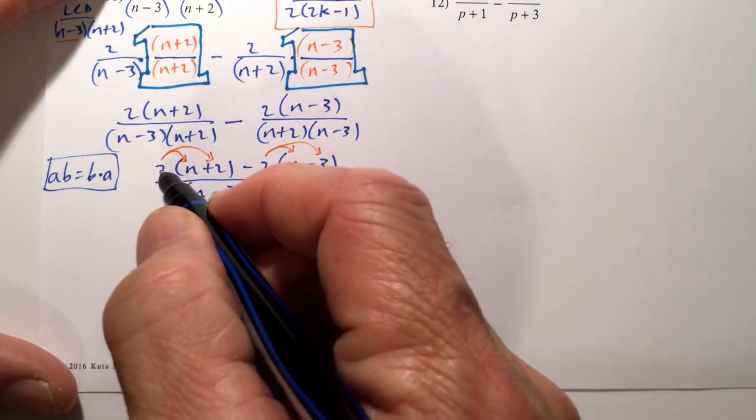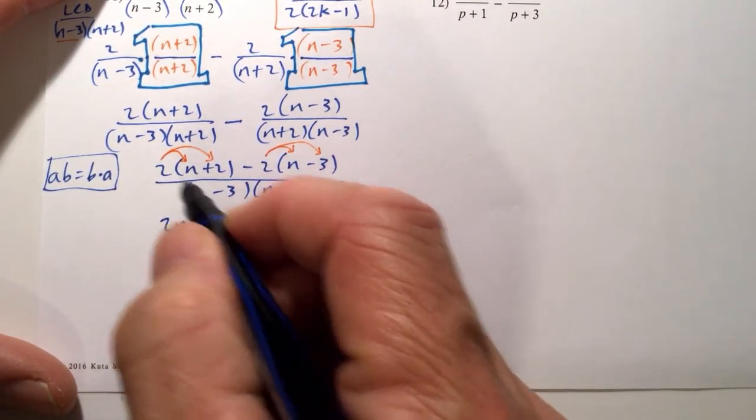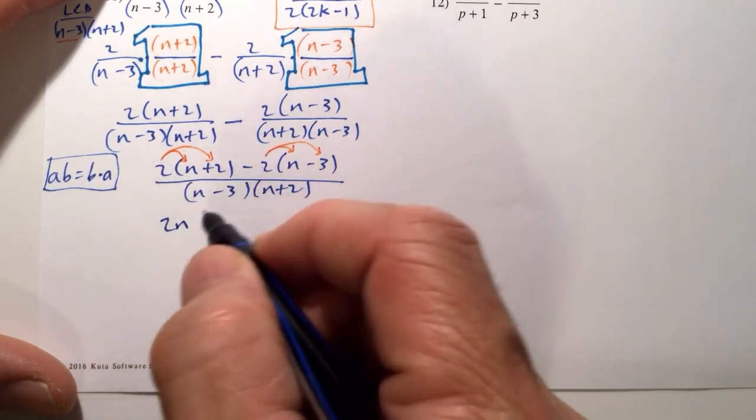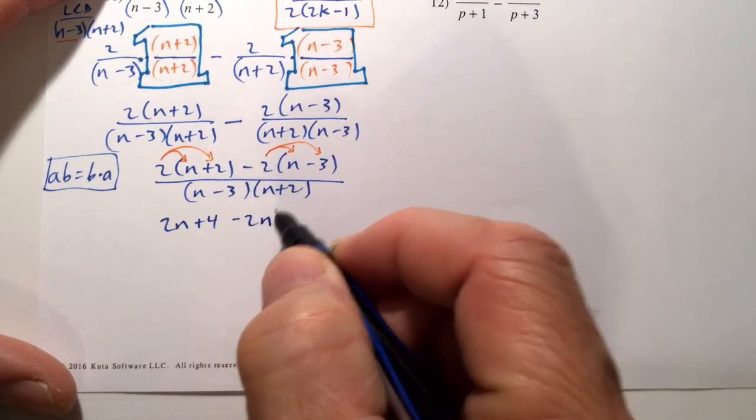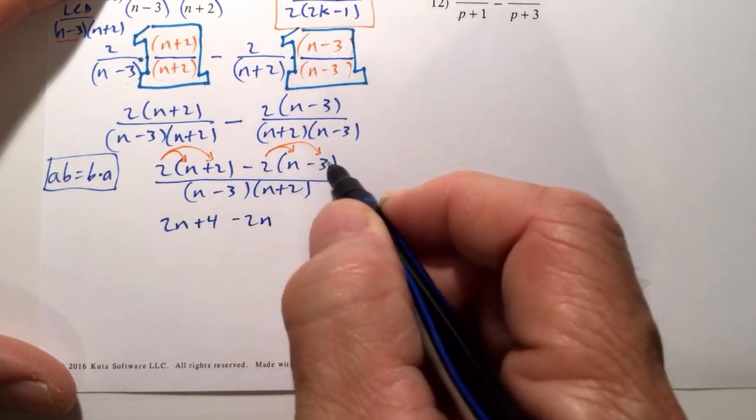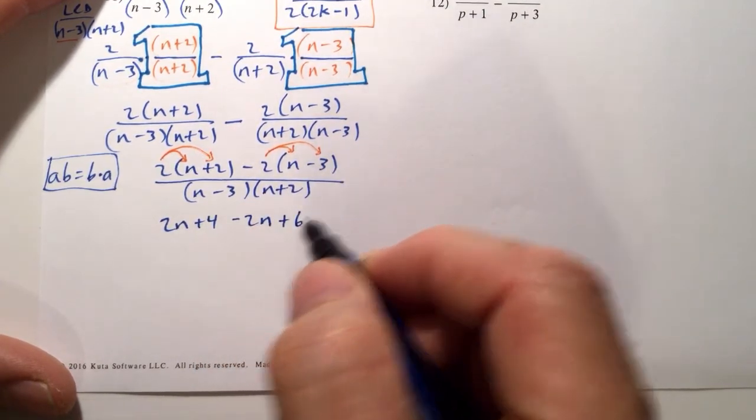And starting here, we have a 2 times n, which is 2n, plus 2 times 2, which is 4, minus, so we have a negative 2 times an n is a negative 2n. A negative 2 times a negative 3 is a positive 6.